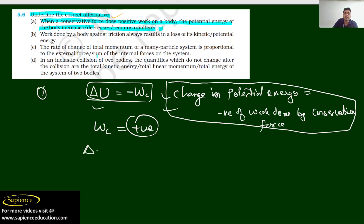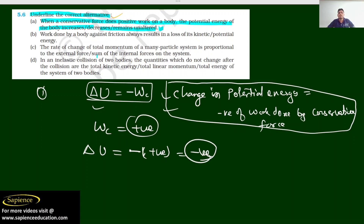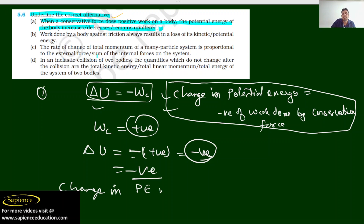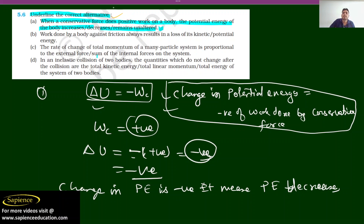So if it is positive, it means that change in potential energy is negative times positive, which means it is totally negative. So when a conservative force does positive work on a body, change in potential energy is negative — it means potential energy decreases. Our correct answer is: decreases.